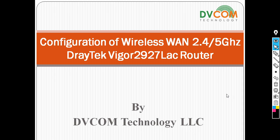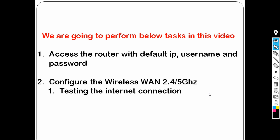Welcome to DVCOM Technology. In this lab I am going to show you how to configure wireless WAN on a Draytek 2927 LAC router. The tasks I am going to do: first I will access the router with the default IP, username and password, and after that I will configure the wireless WAN.